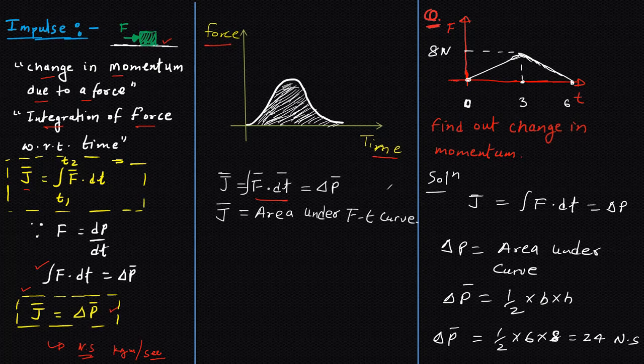So if you draw the F-t curve, area under F-t curve will be the integration F dt, and integration F dt is impulse. So impulse will be area under F-t curve.